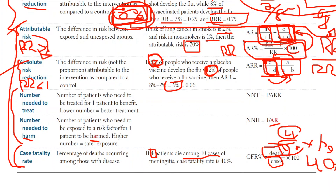The same exact logic applies to number needed to harm. The only difference is that instead of using absolute risk reduction, you use attributable risk. This makes sense: when treating patients you want the exposure to lessen the chance of disease (ARR), but with number needed to harm the exposure increases the chance of disease (AR). That's why you use ARR for number needed to treat and AR for number needed to harm. Hopefully you benefited from this video — consider liking and subscribing, and thanks for watching.